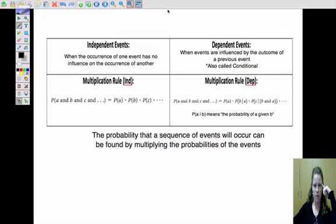So first we need to talk about the different types of events. We're going to talk about independent and dependent events. We've looked at a lot of independent events so far. So those are when something has occurred that has no influence on the occurrence of another thing that's going to happen after it.